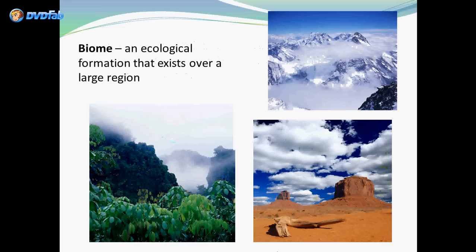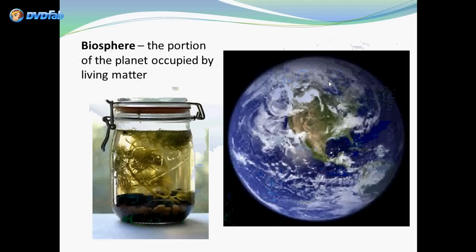A biome is an ecological formation that exists over a large region. Examples would be a rainforest, the desert, or the mountains. A biosphere is the portion of the planet occupied by living matter — the Earth would be considered a biosphere.